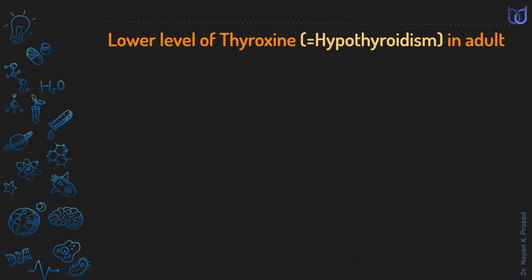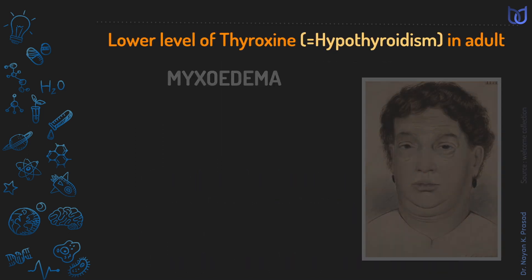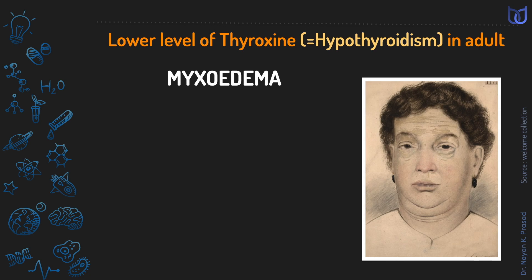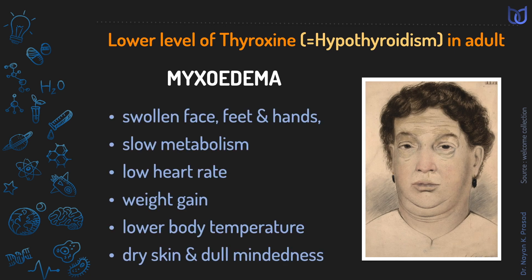A lower level of thyroxine in adults causes myxoedema. This is a disease characterized by swelling of the face and hands, slow metabolism, low heart rate, weight gain, lower body temperature, dry skin, and the person becomes dull-minded.